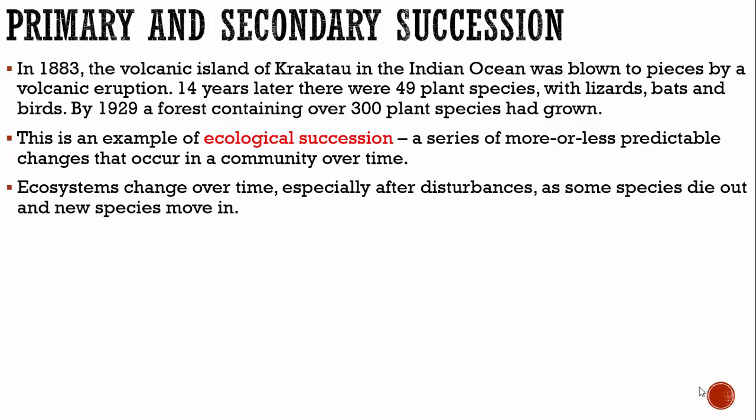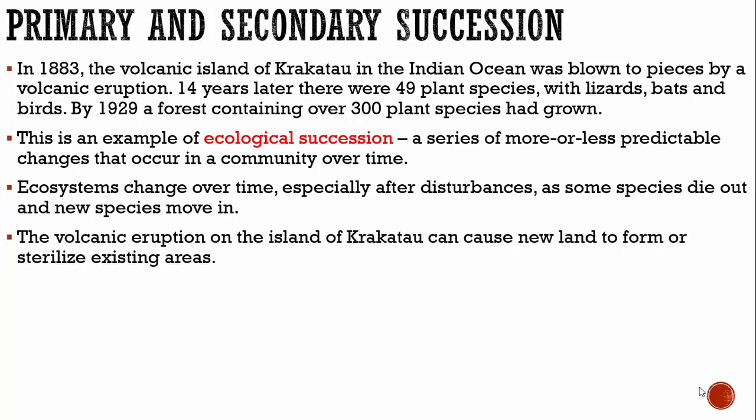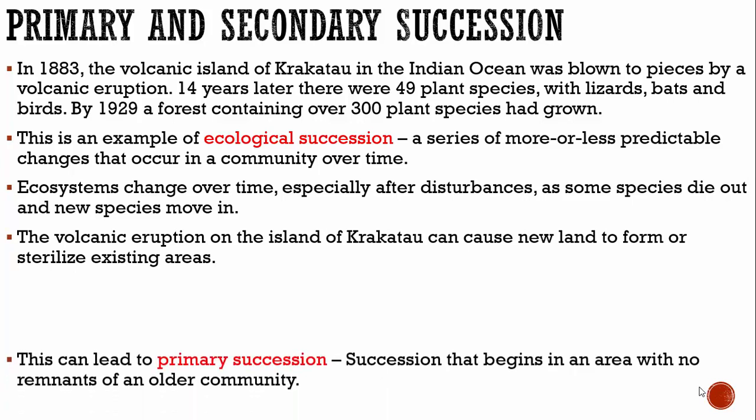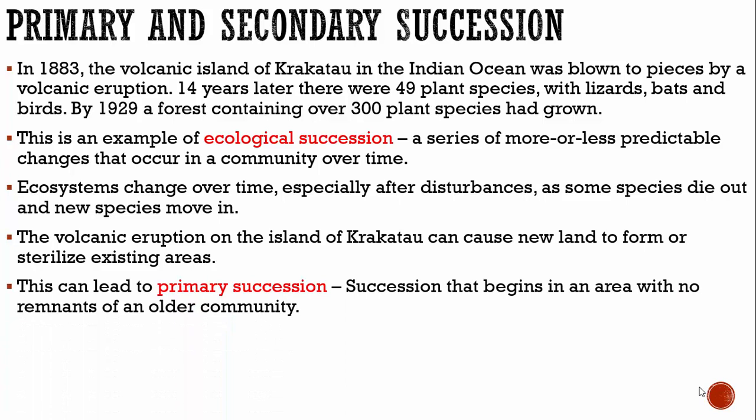Ecosystems change over time, especially after disturbances like on the island of Krakatoa. Some species die out and new species move in. The volcanic eruption on the island of Krakatoa can cause new land to form or sterilize existing areas, and this can lead to what is known as primary succession — a succession that begins in an area with no remnants of an older community, or life beginning there for the very first time.